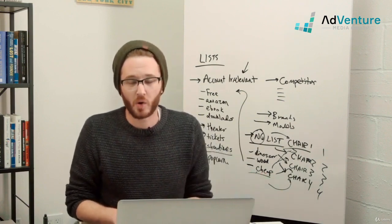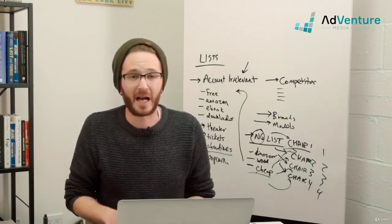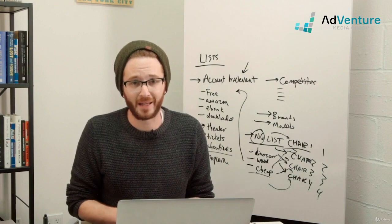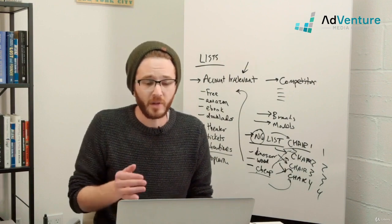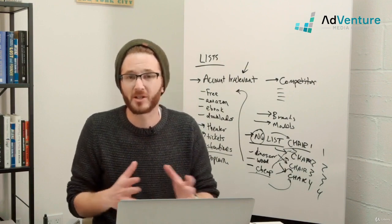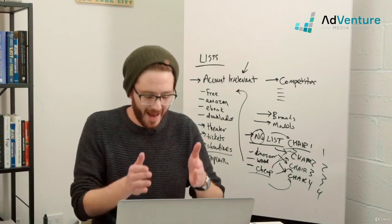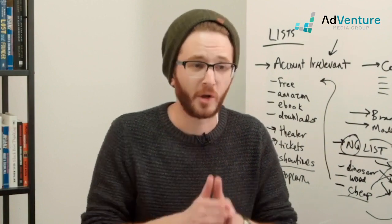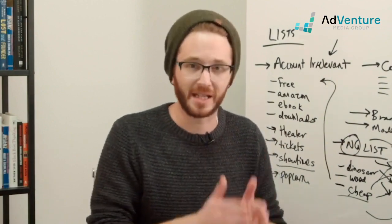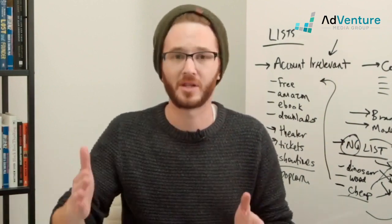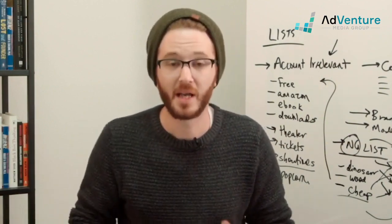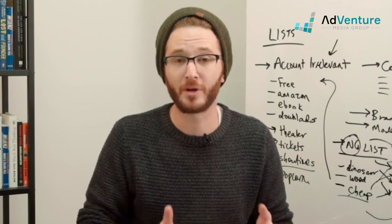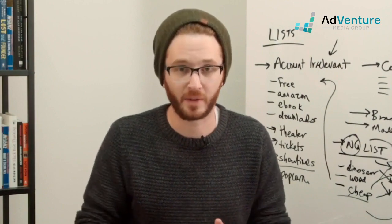I try to make sure my team and I don't add keywords at the campaign level — it just gets too messy. We add negative keywords at the ad group level for the sake of sculpting, and we add keywords to lists and then apply those lists to campaigns. It's the best and most efficient way of keeping track of all your negative keywords.